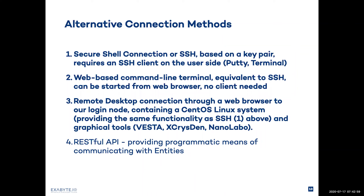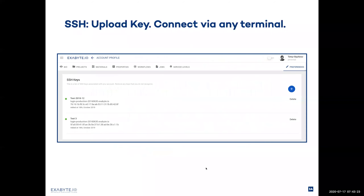Through SSH, we can use any terminal client like PuTTY or the macOS terminal. For the web-based terminal, you only need a web browser. The desktop connection is also facilitated through the web browser. To enable the secure shell connection, we need to establish key pairs — a public and private key. The private key should never be shared. The public key can be uploaded to the web application to establish the connection. Once uploaded and shown in green under SSH keys in your account preferences, you can use that key to connect.